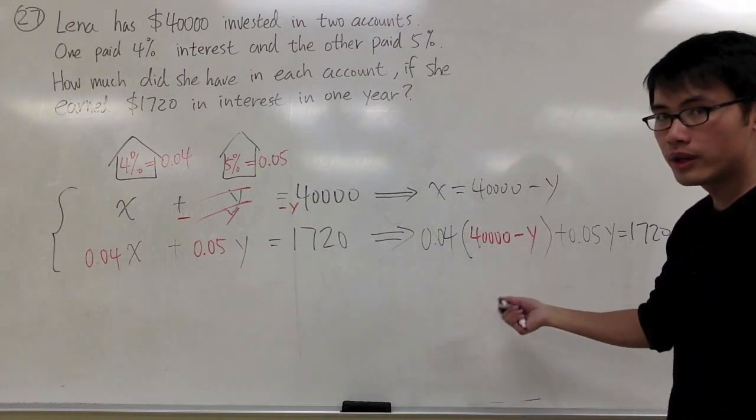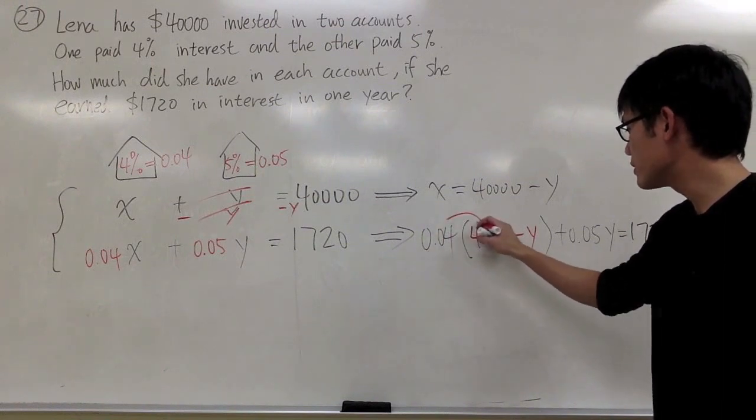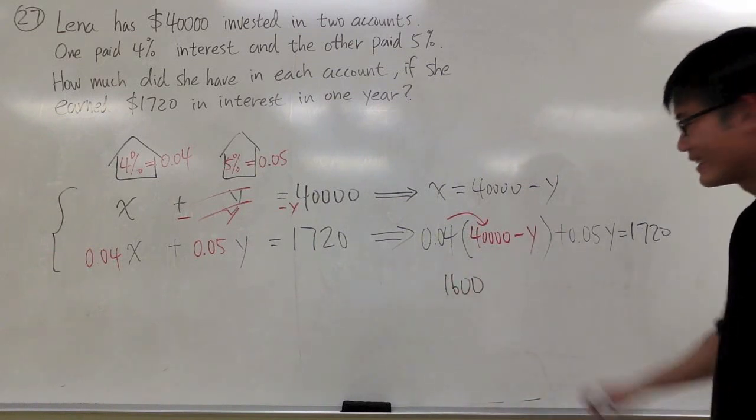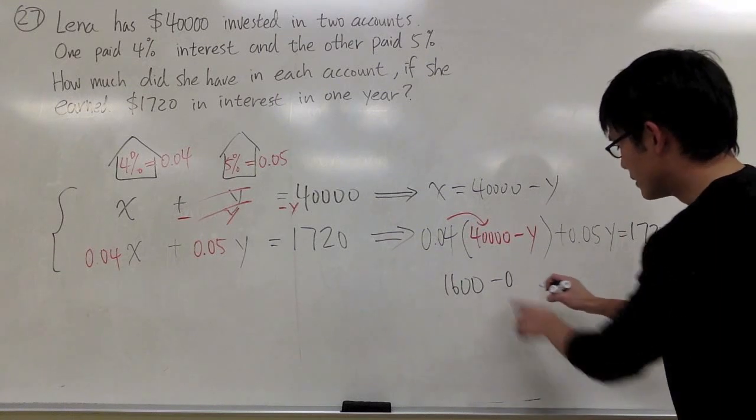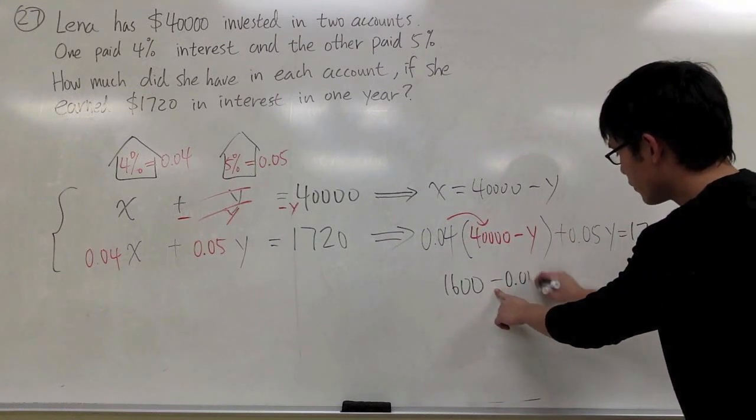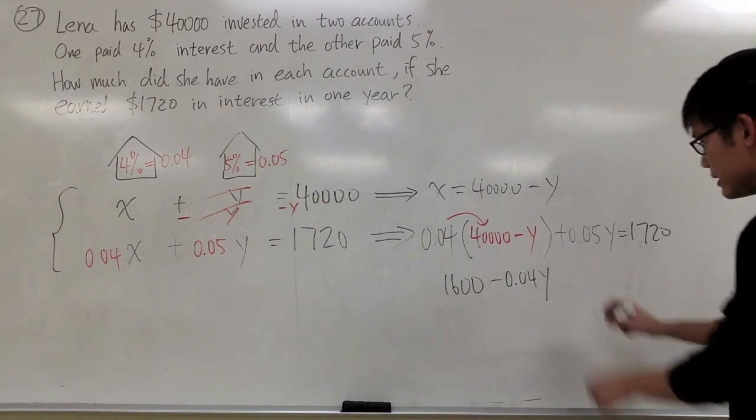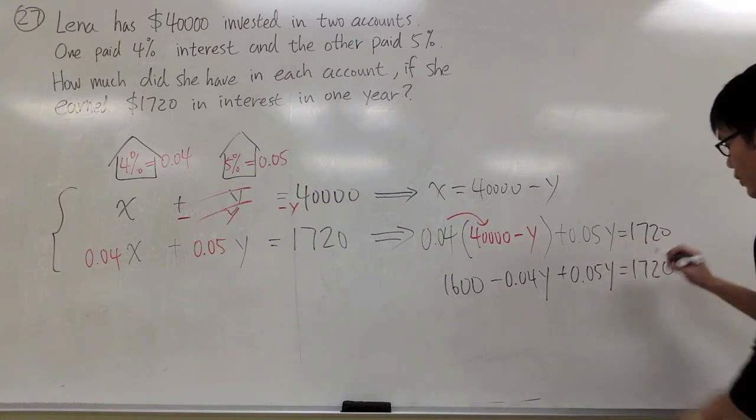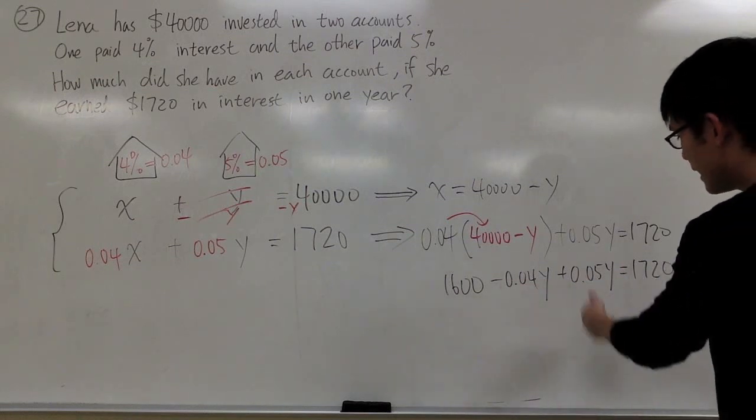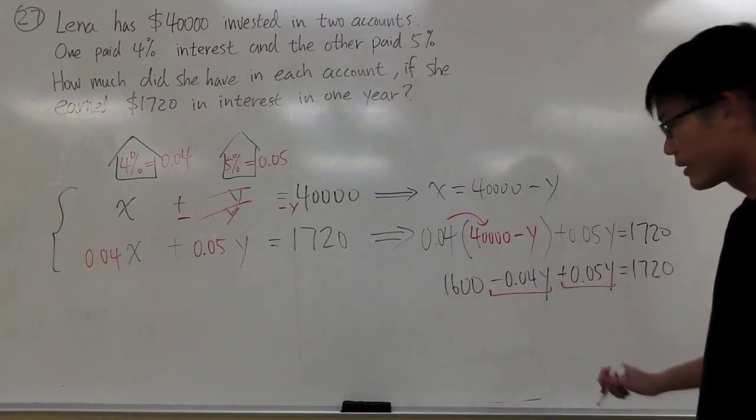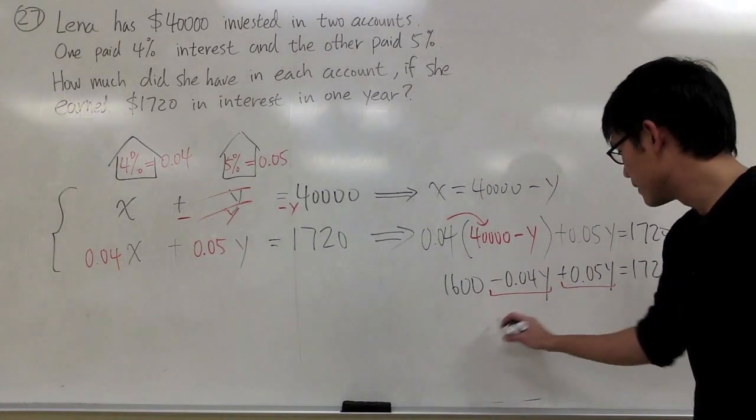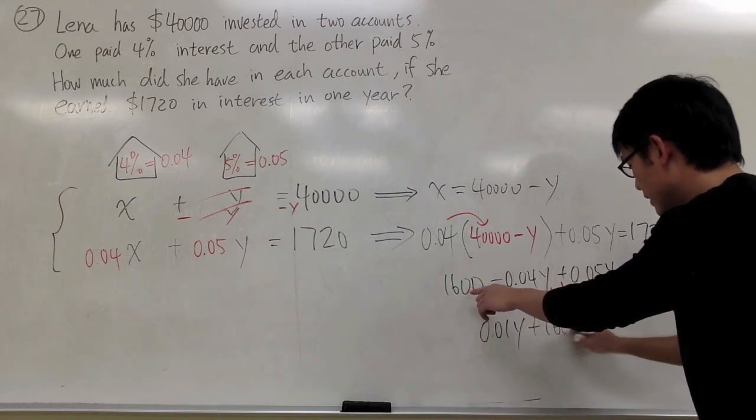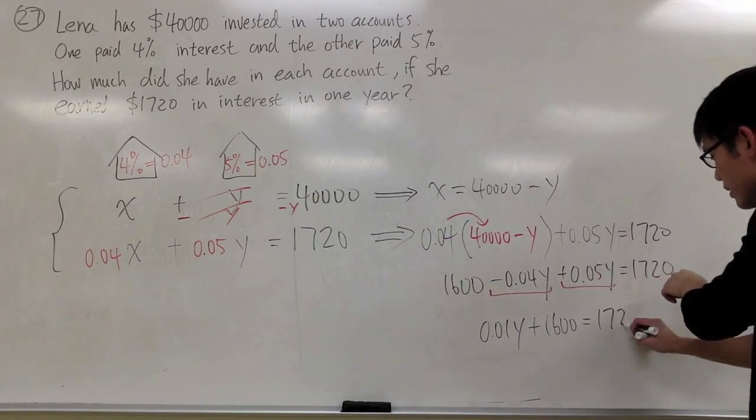And to solve this the normal way, we just distribute the number in front of the parentheses first. So this times that should be 1600 minus 0.04 times y, which is minus 0.04y, and plus 0.05y equals 1720. So combining right here, this and that can be combined, which we will get 0.01y plus 1600 is equal to 1720.